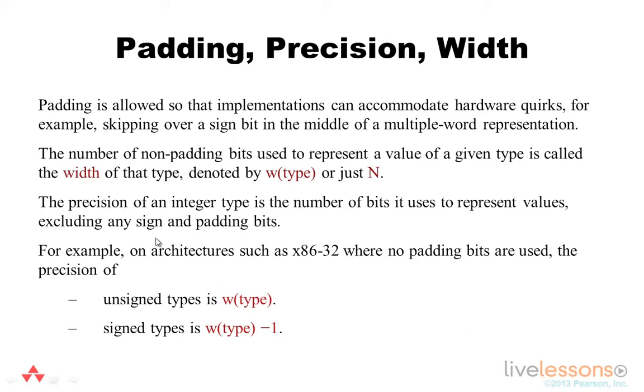The number of non-padding bits used to represent a value of a given type is referred to as the width of that type. It may be denoted by this notation, the width of the type, or just by the letter N.